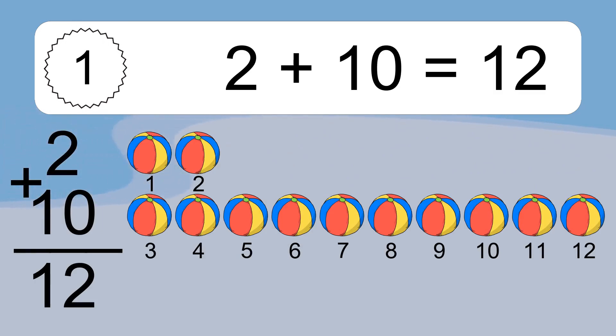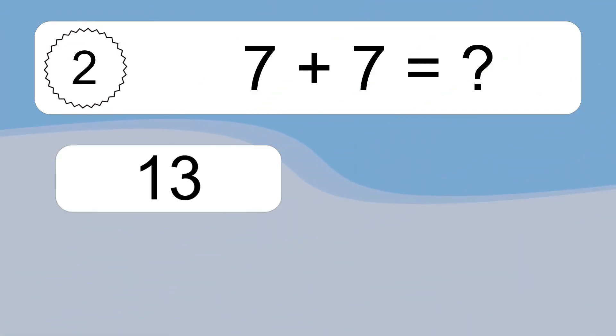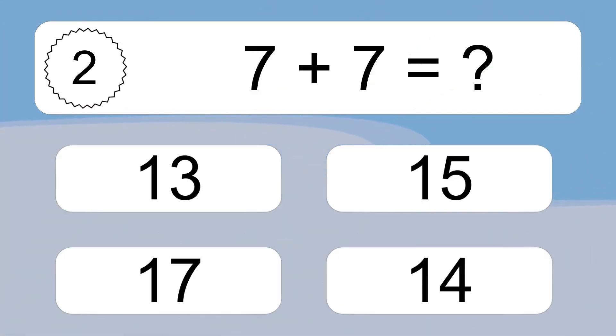Let's count it. 1, 2, 3, 4, 5, 6, 7, 8, 9, 10, 11, 12. 7 plus 7 equals what?